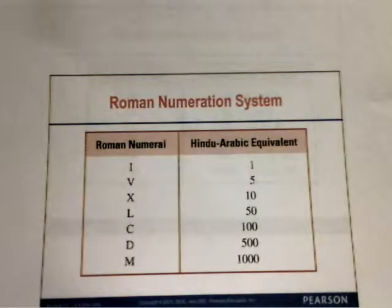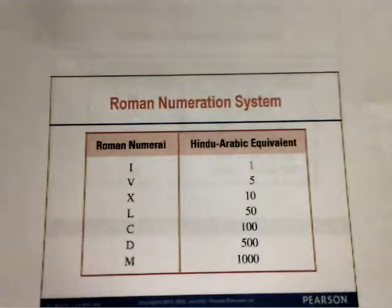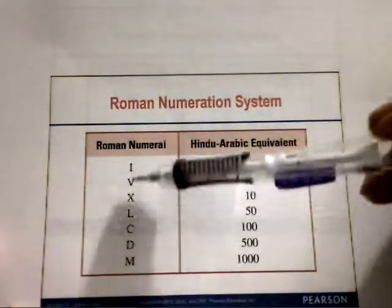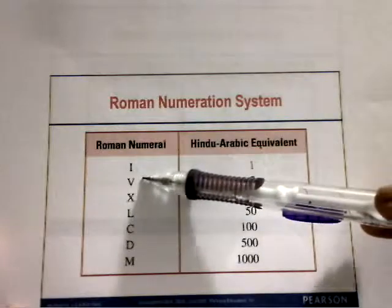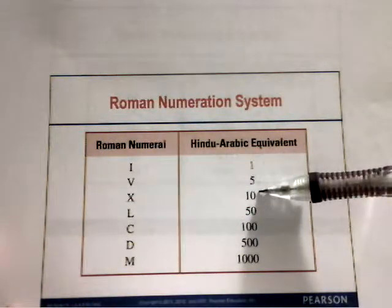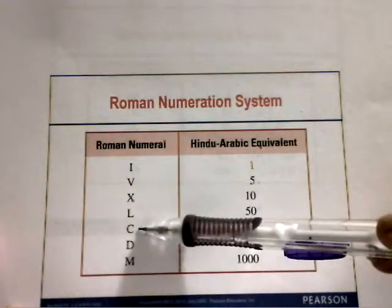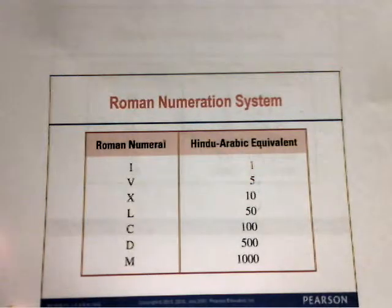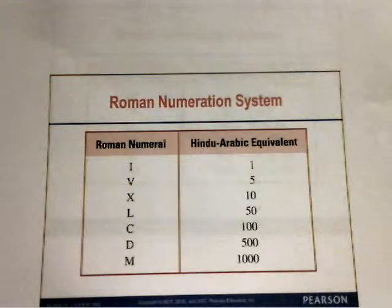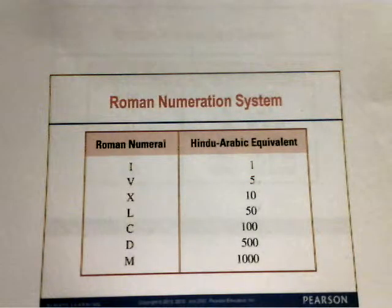The Roman numeration system is used on buildings, clocks, and watches. I equals 1, V equals 5, X equals 10, L equals 50, C equals 100, D equals 500, and M equals 1,000. Roman numerals also appear in TV and movie credits where the copyright date is sometimes written in Roman numerals.